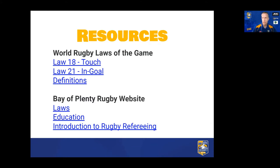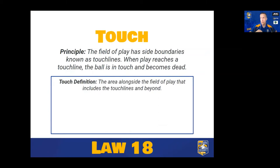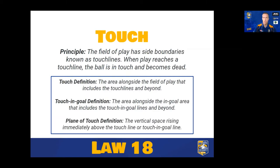Also on our Bata Plenty Rugby website we have our laws and education pages where we break down different parts of the game, and also our introduction to refereeing workbook and course. Touch itself is the area alongside the field of play; the touch lines include all the area beyond the touch lines as well and anything touching it. The touching goal area is just an extension of the touch lines running through into the end goal. The plane of touch refers to an imaginary wall that extends up from the lines all the way into the air above.